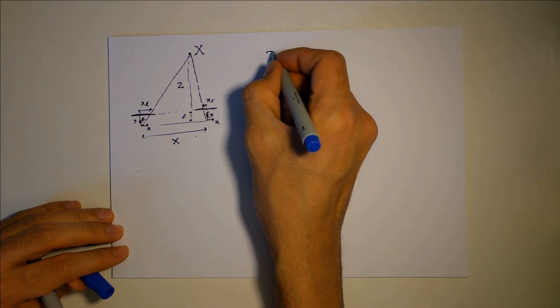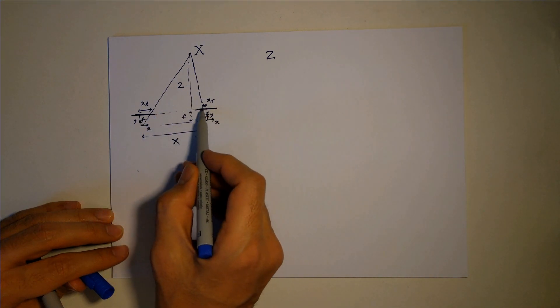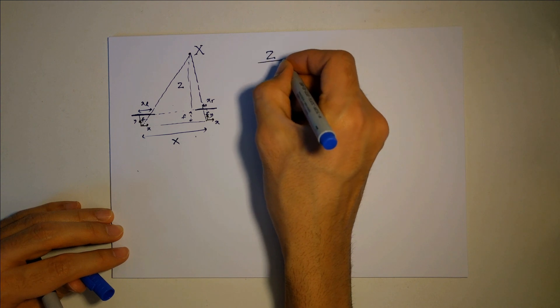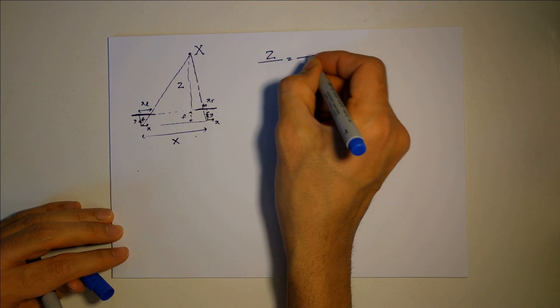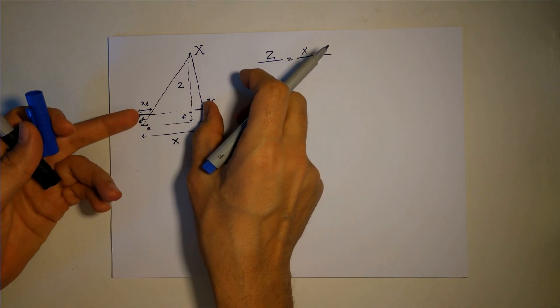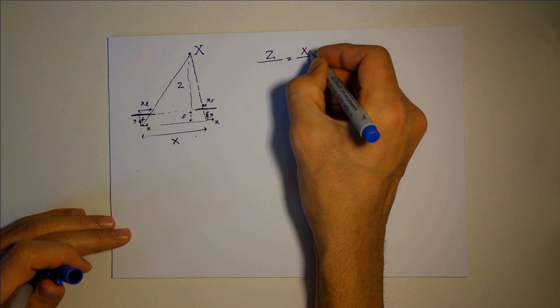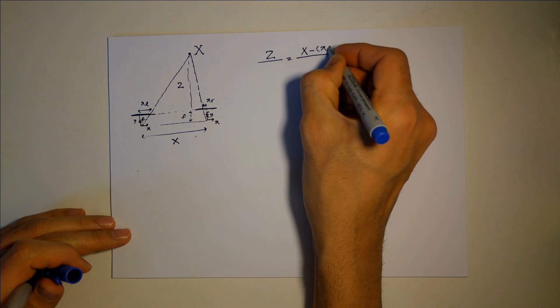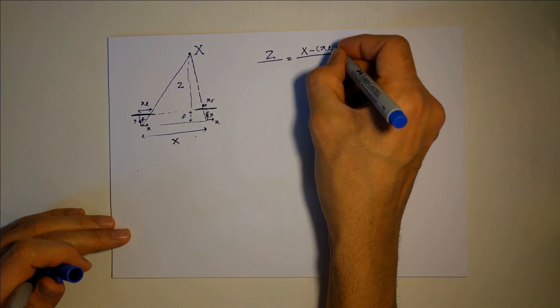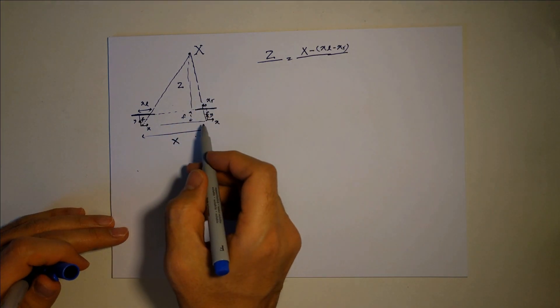So Z in this triangle over this, which is basically X minus this and this, but as I said, the X on the right side has a negative sign because it's on the other side, so minus XR is equal to, in this triangle...